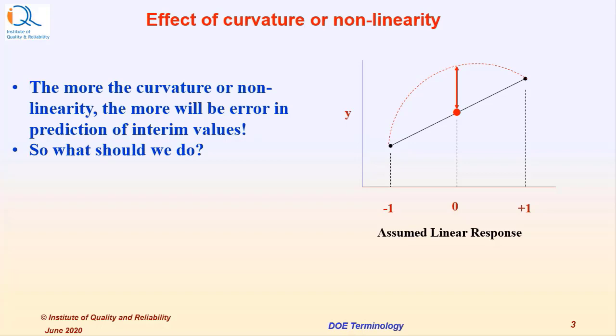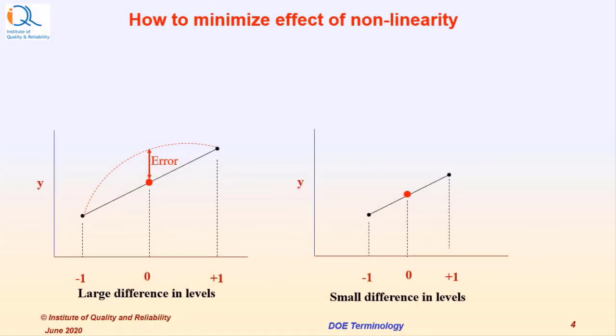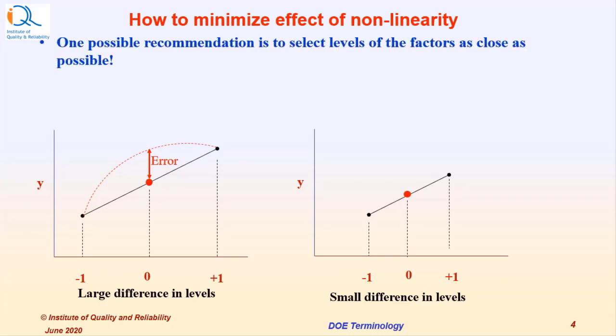So what should we do? How to minimize the effect of this nonlinearity in our experimentation? One possible recommendation is to select levels of the factors as close as possible. As shown in the two figures, this will help in reducing the error.